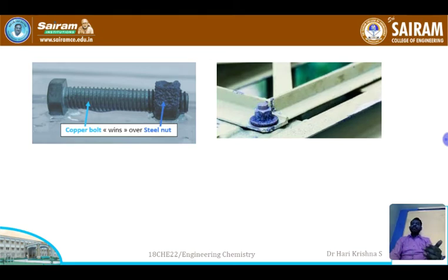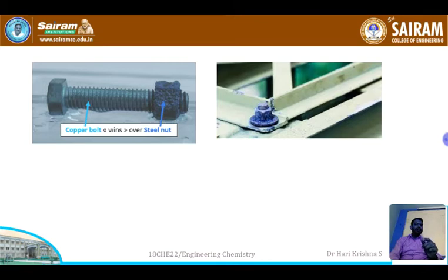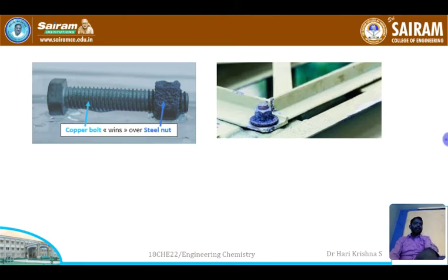Iron acts as anode and undergoes corrosion whereas copper is unaffected, acting as cathode. When this copper bolt and steel nut combination is used in any equipment, the steel nut undergoes corrosion and slowly becomes loose — the entire equipment or part of it may collapse. To prevent differential metal corrosion, the nut and bolt should be made of the same metal.